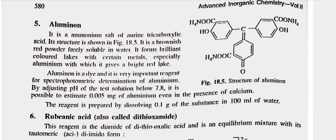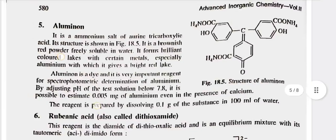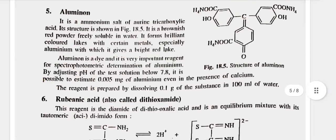Fifth, aluminon — it is the ammonium salt of aurintricarboxylic acid. Its structure is shown in figure 18.5. It is a brownish-red powder freely soluble in water. It forms brilliant colored lakes with certain metals, especially aluminum, with which it gives a bright red lake. Aluminon is a dye. It is a very important reagent for spectrophotometric determination of aluminum. By adjusting pH of the test solution below 7.8, it is possible to estimate 0.005 mg of aluminum, even in the presence of calcium. The reagent is prepared by dissolving 0.1 g of substance in 100 ml of water.